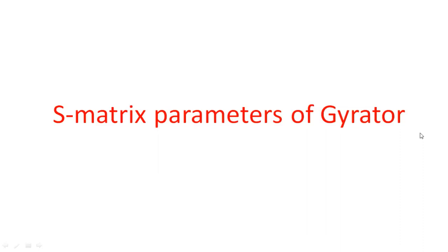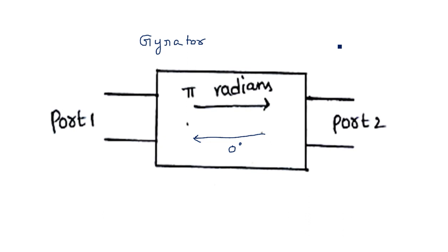In this video I am going to explain the scattering matrix parameters of the gyrator. In the previous video I explained the working principle and operation of the gyrator — how it passes the signal from the first port to the second port with 180 degrees phase shift, and in the reverse direction there is no phase shift. This is just an example of how the gyrator works.